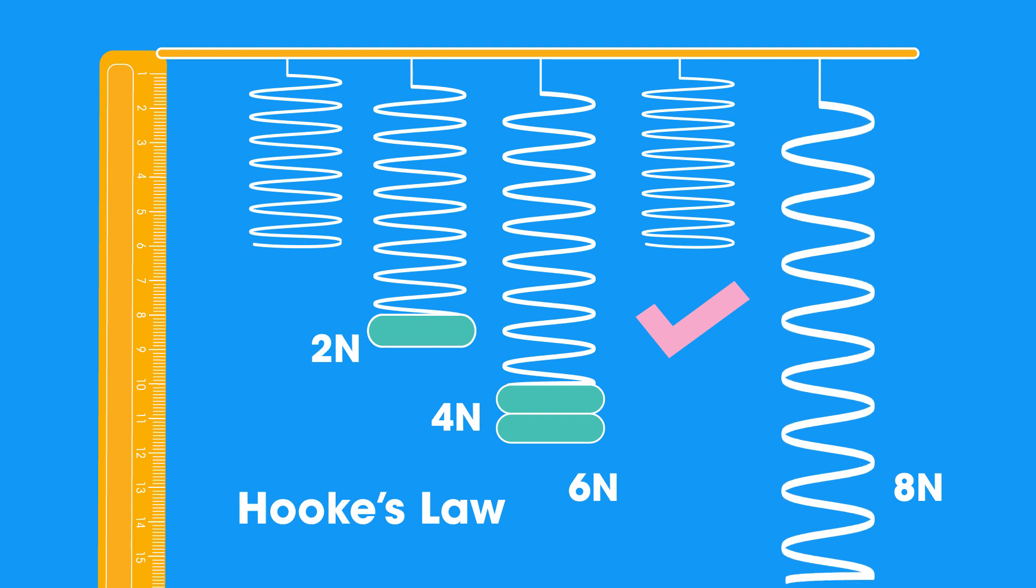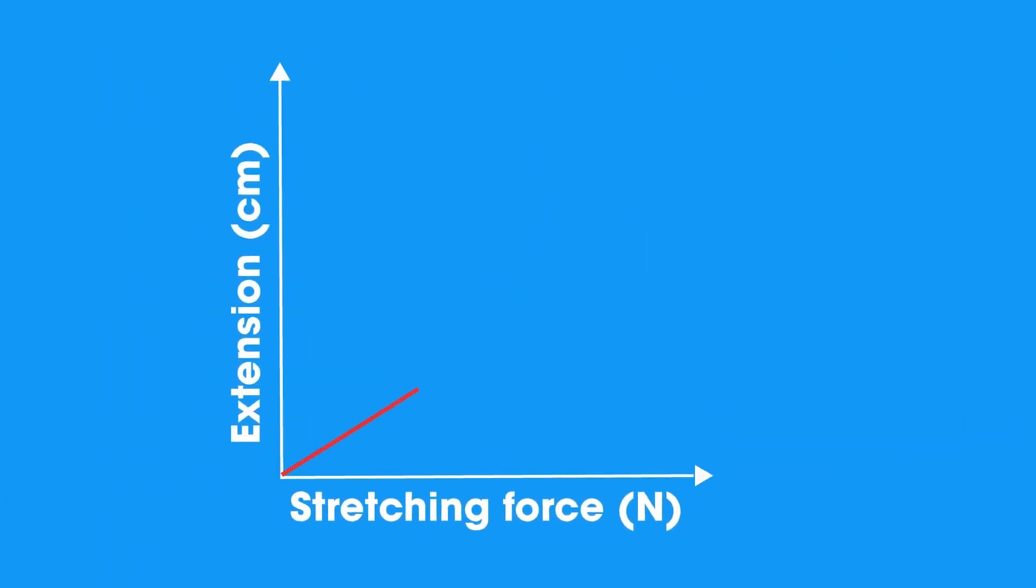At the elastic limit, the spring becomes overstretched and won't return to its original state. The straight line shows that the extension is directly proportional to the load on the spring.